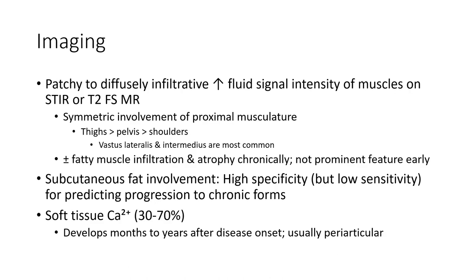Imaging: MRI shows diffuse infiltrative increased signal intensity of muscle on T2 fat-saturated sequences, with bilateral symmetric involvement of the proximal musculature around the pelvis and shoulders, plus or minus fatty muscle infiltration, then atrophy chronically, which is not a prominent feature early.